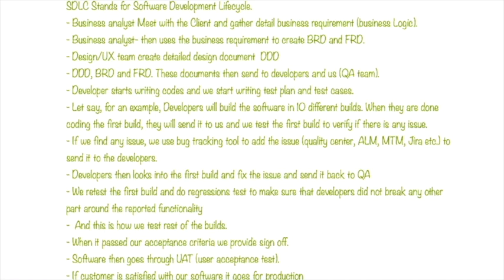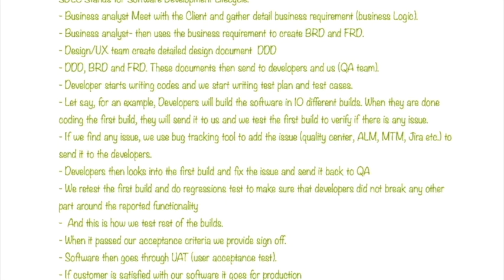For example, developers will build the software in 10 different builds. When they finish the first build, they send it to QA to verify for issues. If we find any issue, we use a bug tracking tool to log it. Developers fix the issue and send it back to QA. We retest and do regression testing to make sure nothing else broke. When it passes our acceptance criteria, we provide sign-off. The software goes through UAT, and if the customer is satisfied, it goes to production. Maintenance is provided after that.